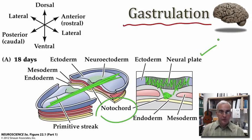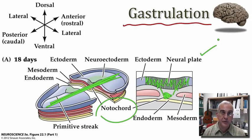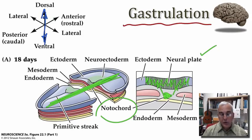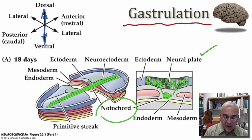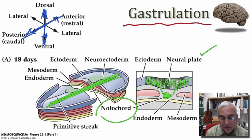That region of ectoderm differentiates into a columnar epithelium that we call the neural plate. The neural plate, sometimes called neuroectoderm, will begin the process of forming the entire central nervous system. So the notochord is responsible for inducing the differentiation of the neural plate. I should also mention that the notochord helps to establish our primary axes of orientation in the developing embryo. The notochord forms in a more dorsal position, so its presence helps us define what is dorsal versus ventral. The length of the notochord establishes the anterior-to-posterior axis of the developing embryo.